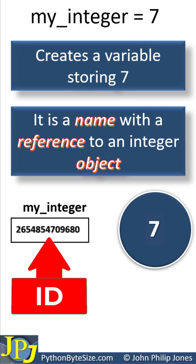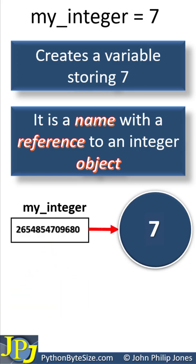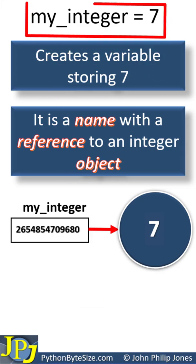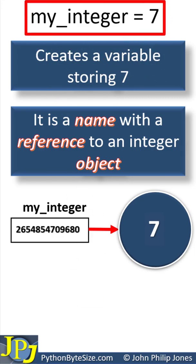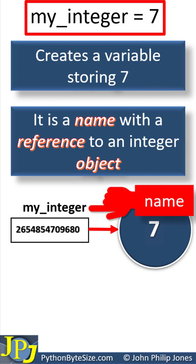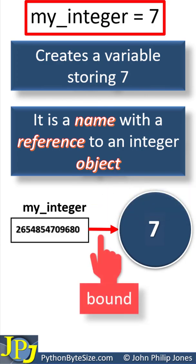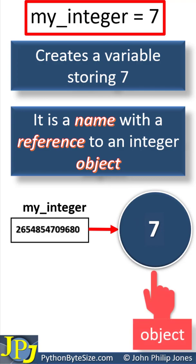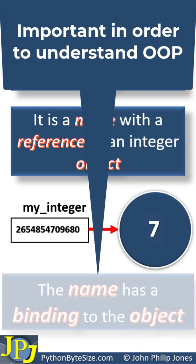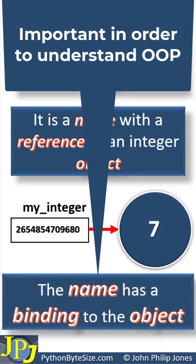The name will have an ID, which is the address of where the object is in the computer's memory. This ID will point to the object, which contains the integer value of 7. So for this program statement, what we have is a name, and this name is bound to the object — we can say that the name has a binding to the object.